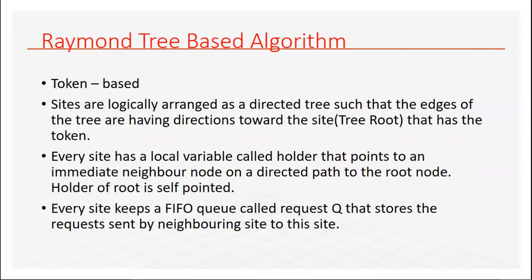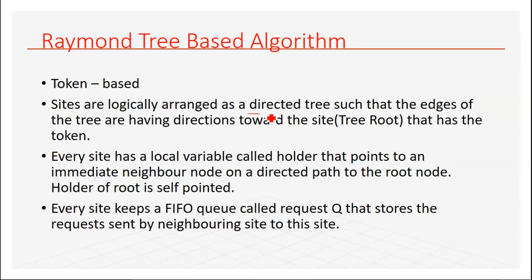The first point is that the Raymond tree-based algorithm is token-based. A special structure is used here: the sites involved in a distributed system are logically arranged as a directed tree. The edges of the tree have directions towards the root node, which is the token-holding node. Initially, the root node is said to be the token-holding node. The sites are logically arranged as a directed tree.